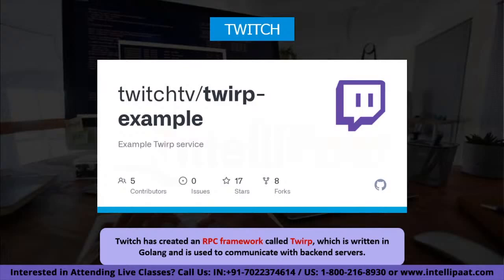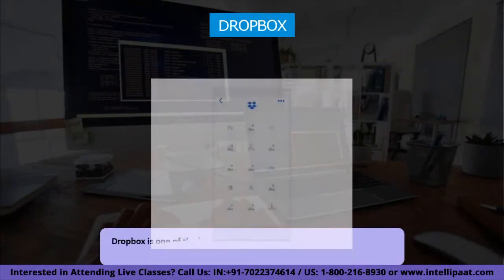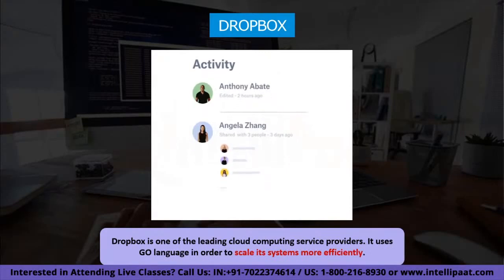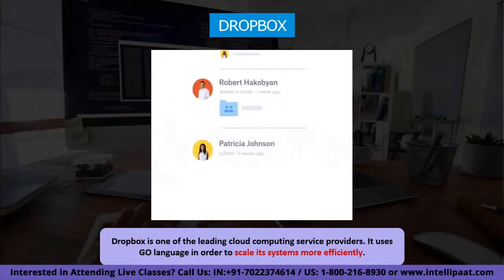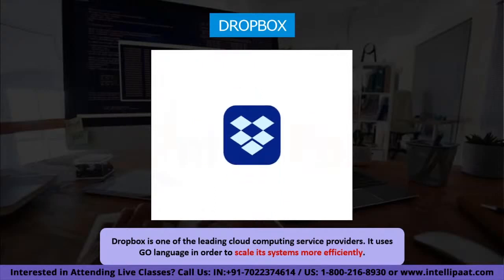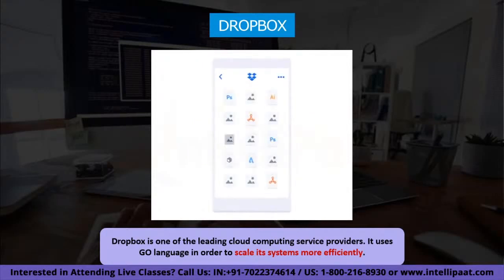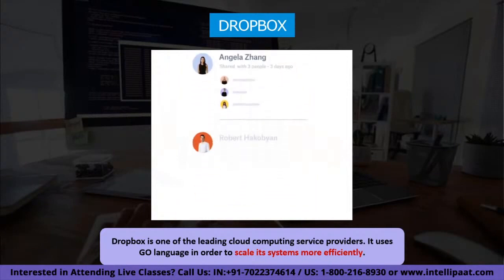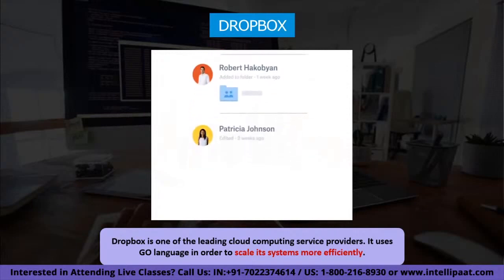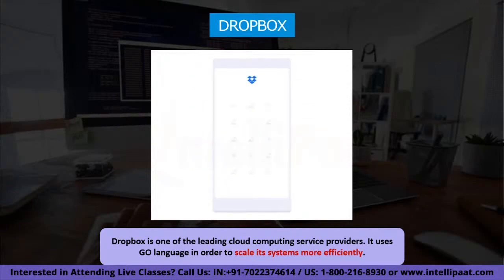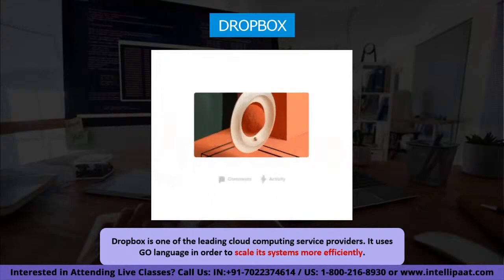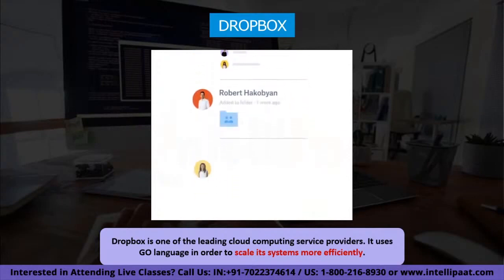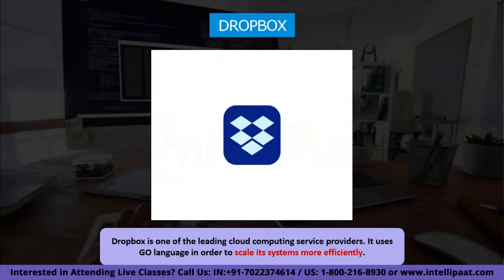Golang is employed by Twitch to provide its viewers with the finest quality video broadcast possible. Another wonderful example of large corporations employing Golang is Dropbox, one of the leading cloud computing service providers. It uses Golang to scale its system more efficiently. The company migrated its critical systems from Python to deal with the problem of insufficient depth of Go libraries and to build larger systems. Dropbox began building its own libraries, which allowed them to improve caching, improve their standard error interface, enable programs to generate SQL statements programmatically, and implement fully functional Memcache client libraries.